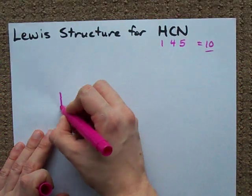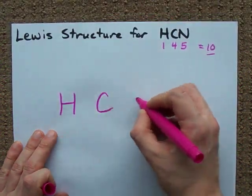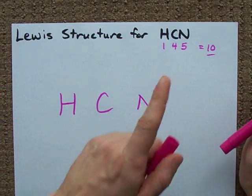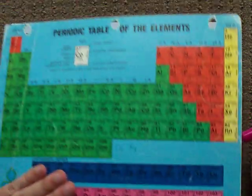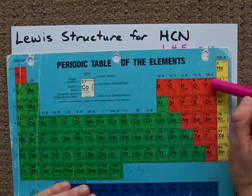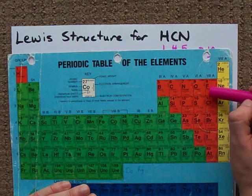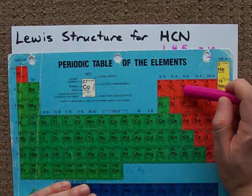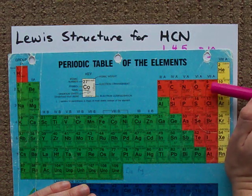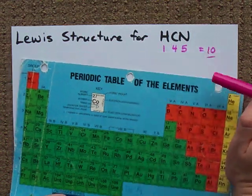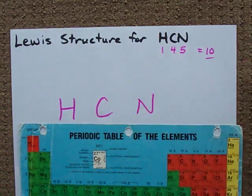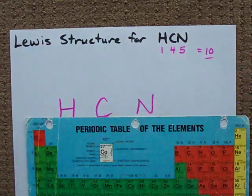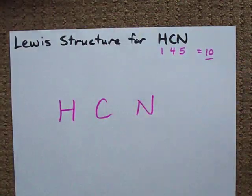I write my atoms down on the paper with the least electronegative atom in the center. Remember, electronegative atoms are found up here. Carbon will often be at the center, nitrogen will sometimes be at the center, fluorine will never be at the center. Hydrogen is a bit of an exception. Hydrogen is never at the center.